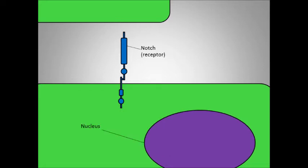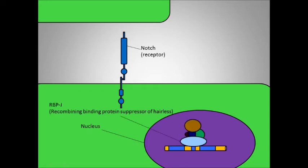When Delta is not bound to Notch, then the target gene is suppressed. In this example of neurogenesis, it is the Hairless Enhancer of Split, or HES gene.